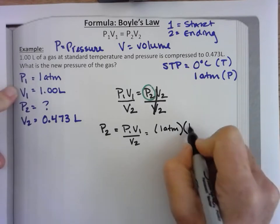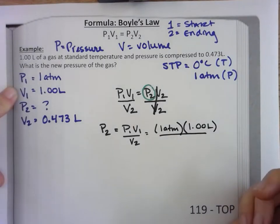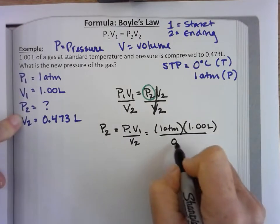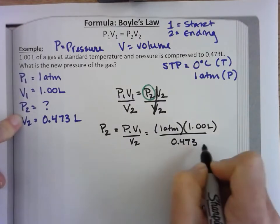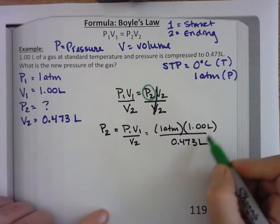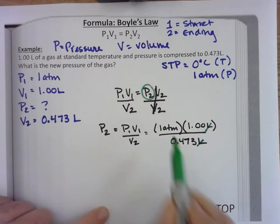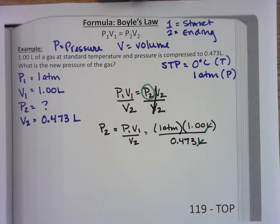So over on my list here I have one ATM times my v1 which is 1.00 liters, include those zeros we have to do sig figs for this, v2 0.473 liters. At this point I usually check my units and these liters cancel. I am in ATM, that is what I'm looking for. I'm looking for pressure. 1 times 1 is 1 and